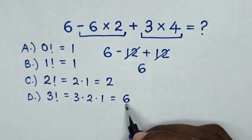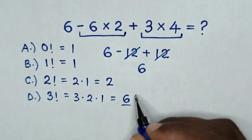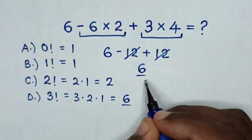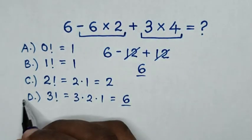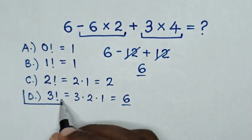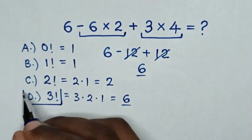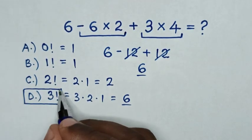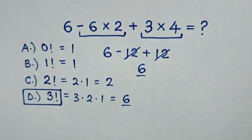So these are the same. Therefore, D, 3 factorial, is our final answer. Thank you for watching.